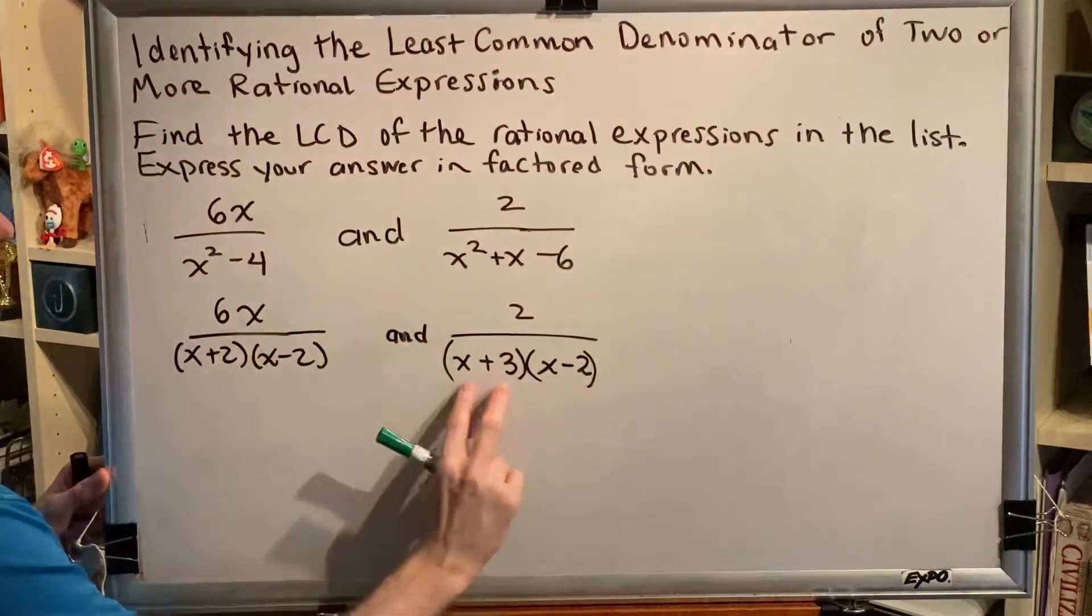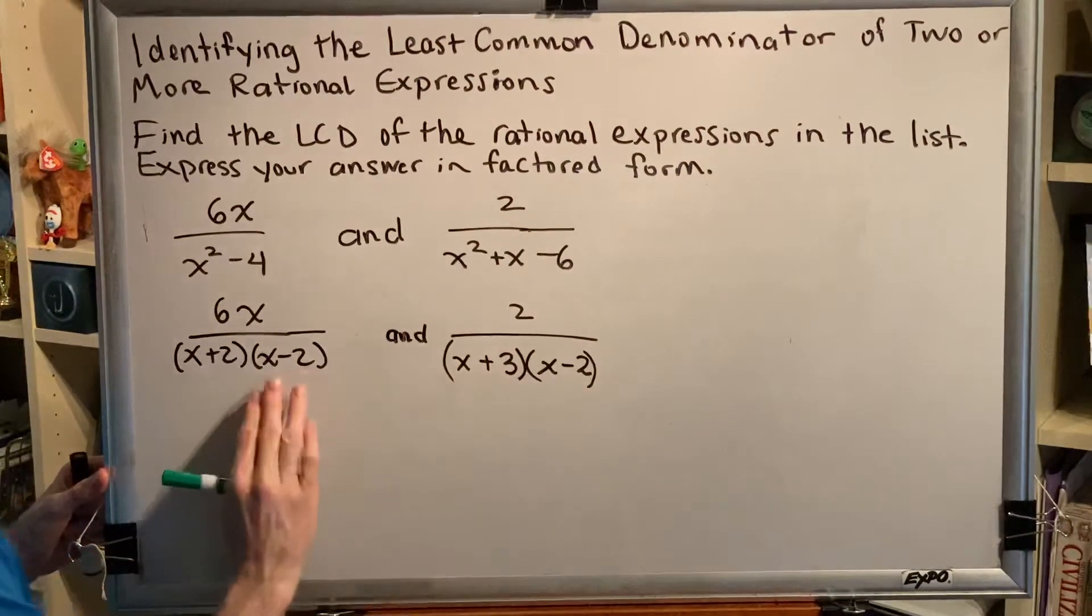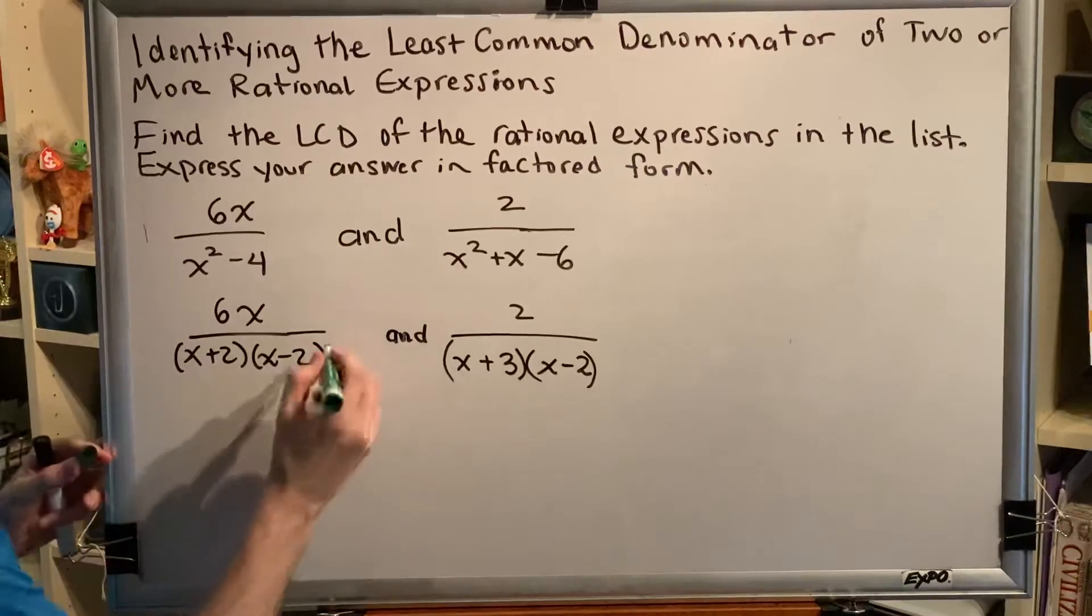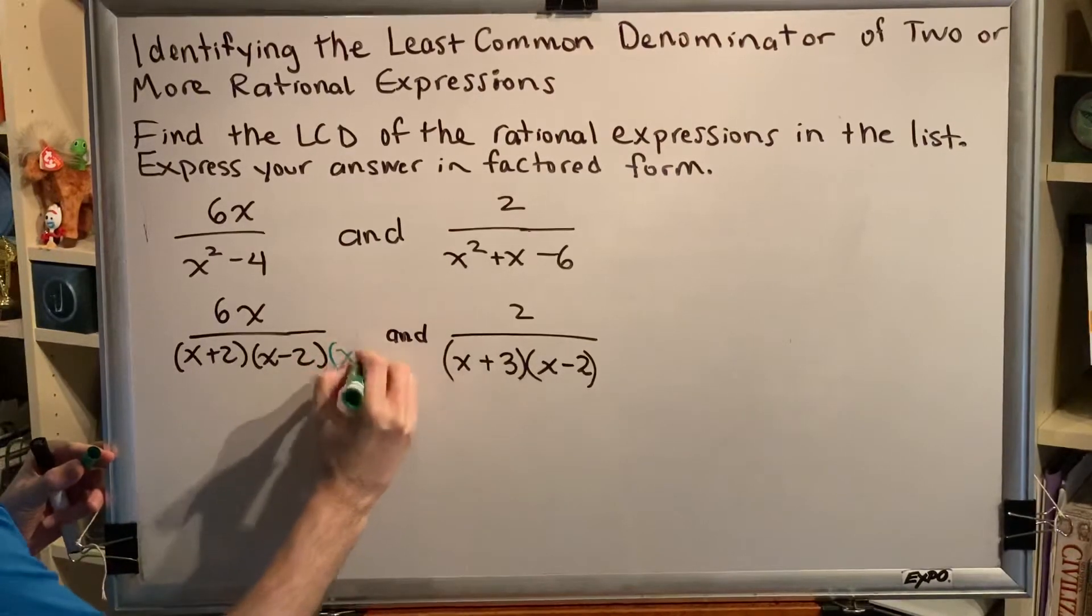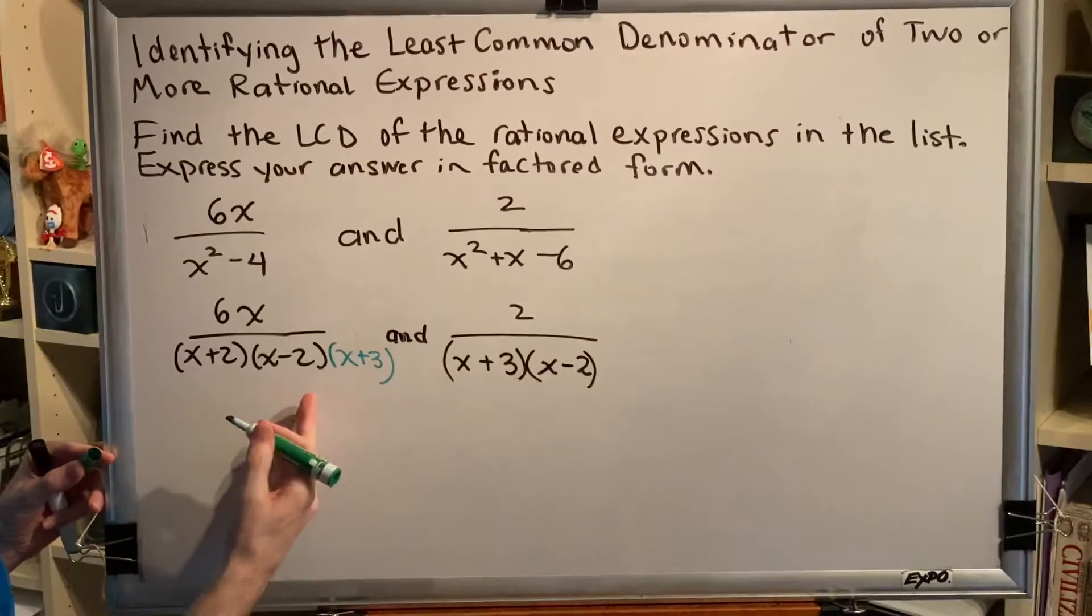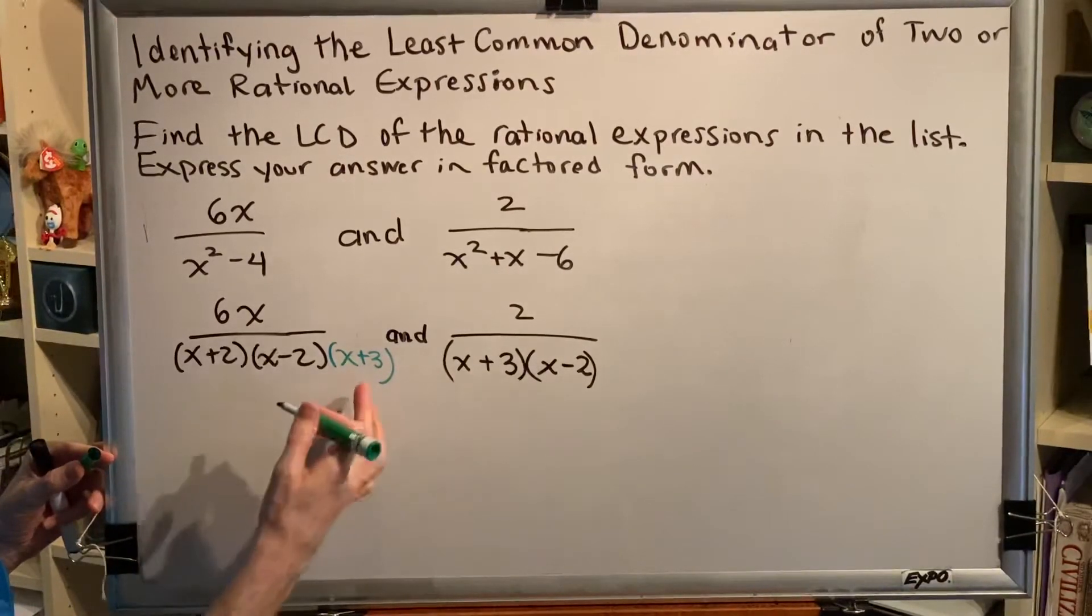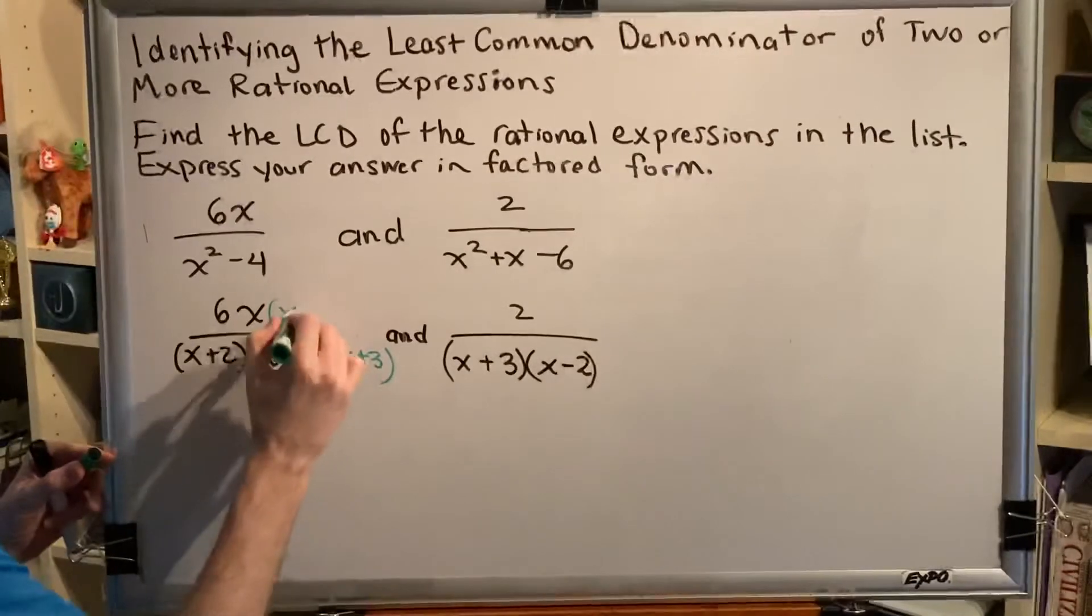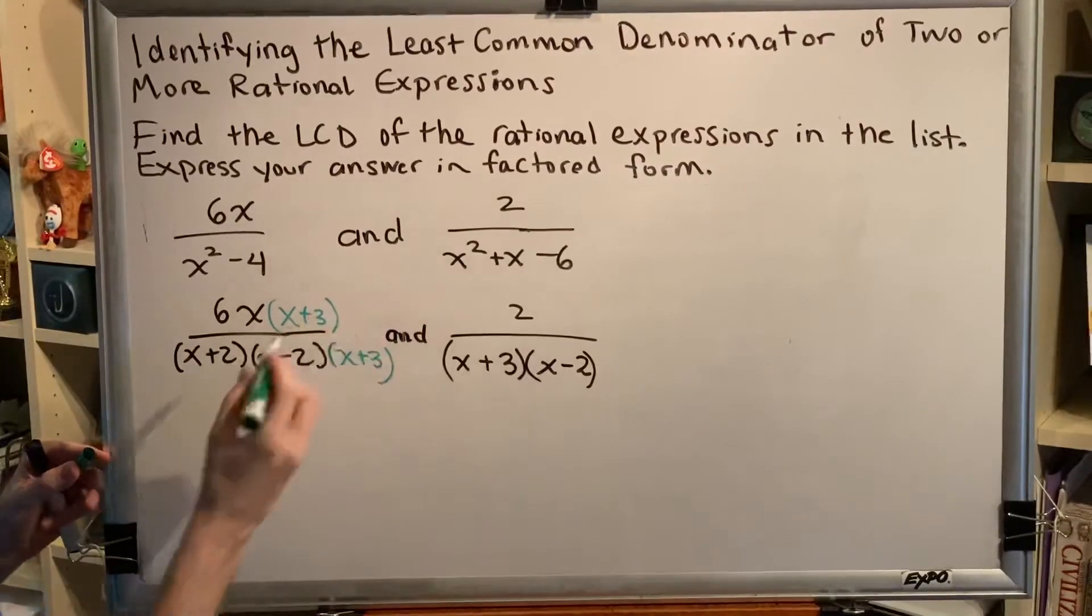Well, this fraction has the factor x plus 3 in the denominator, whereas this one does not. Therefore, this first fraction needs an x plus 3 so that they can start to become alike. But in order to make our first fraction equivalent, if you put an x plus 3 in the bottom, you are required to also put an x plus 3 in the top.